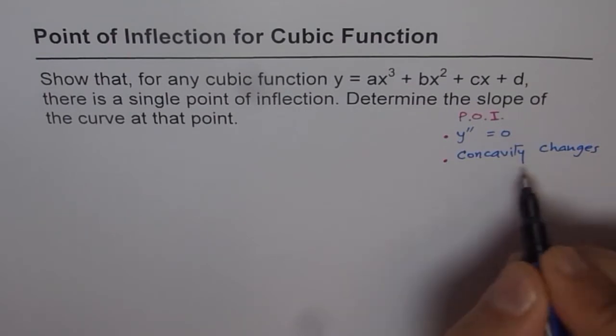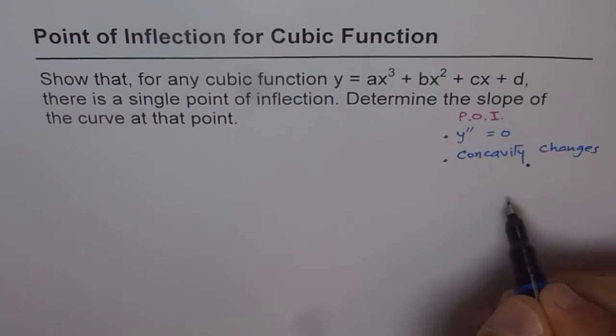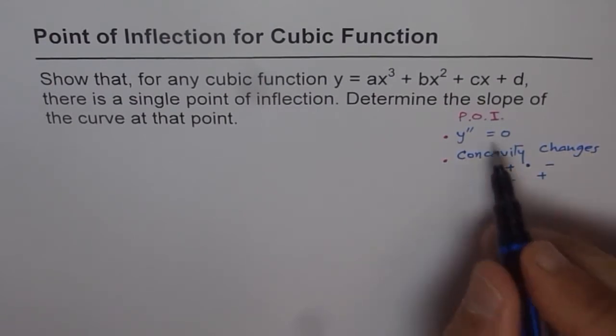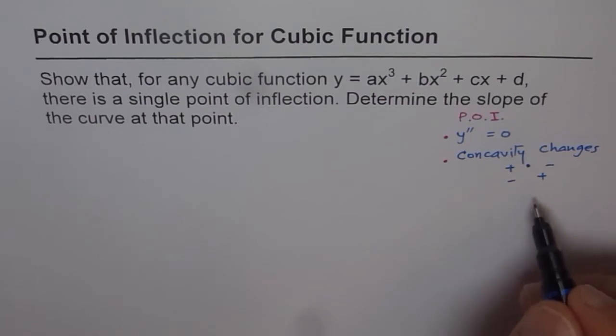When we say concavity changes, let's say we are considering a point here, then y double dash changes from either plus to minus or from minus to plus, either way. Then you have a point of inflection.